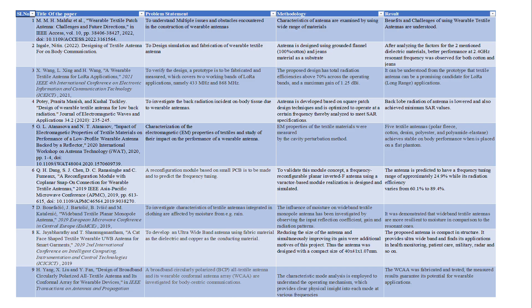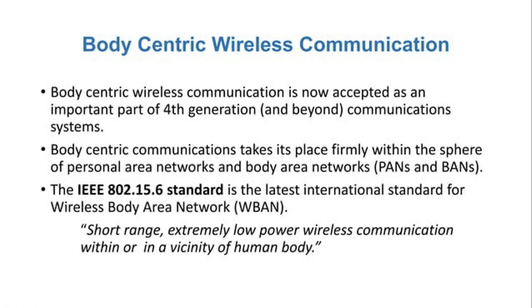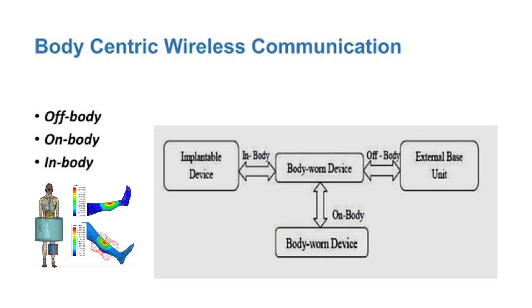This is the literature survey we have done to understand more about the project. The project we have done is based on body-centric wireless communication. This type of communication is now accepted as an important part of the 4th generation communication system. Body-centric communication takes its place firmly within the sphere of personal area networks and body area networks. The IEEE 802.15.6 standard is the latest international standard for wireless body area network. Generally body-centric wireless communication is of three types: off-body, on-body and in-body. And the project we have done is on-body type of wireless-centric communication.